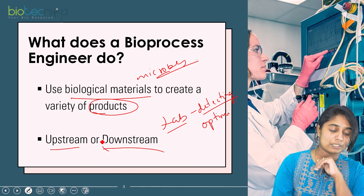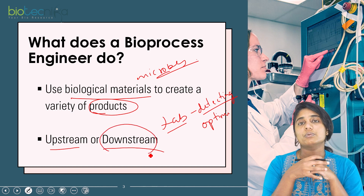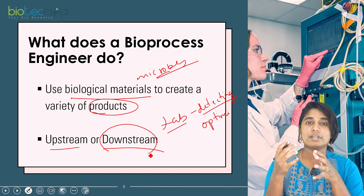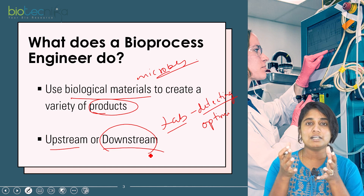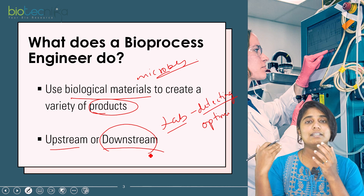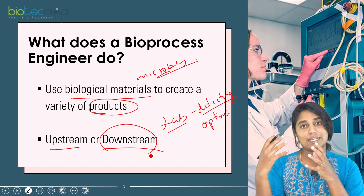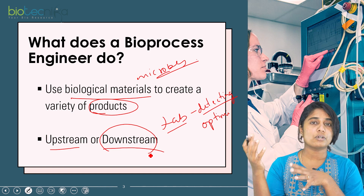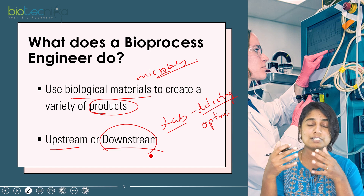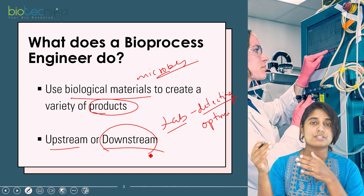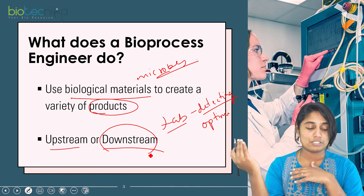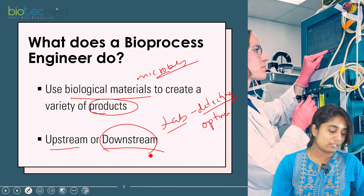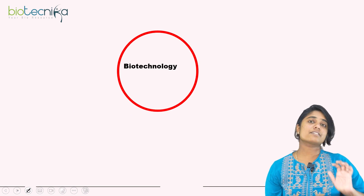The downstream process basically extracts the product out of the media from the bioreactor. It then purifies that product because it will have a lot of impurities. So purification is another step, followed by packaging. These are the three broad areas involved in downstream processing.